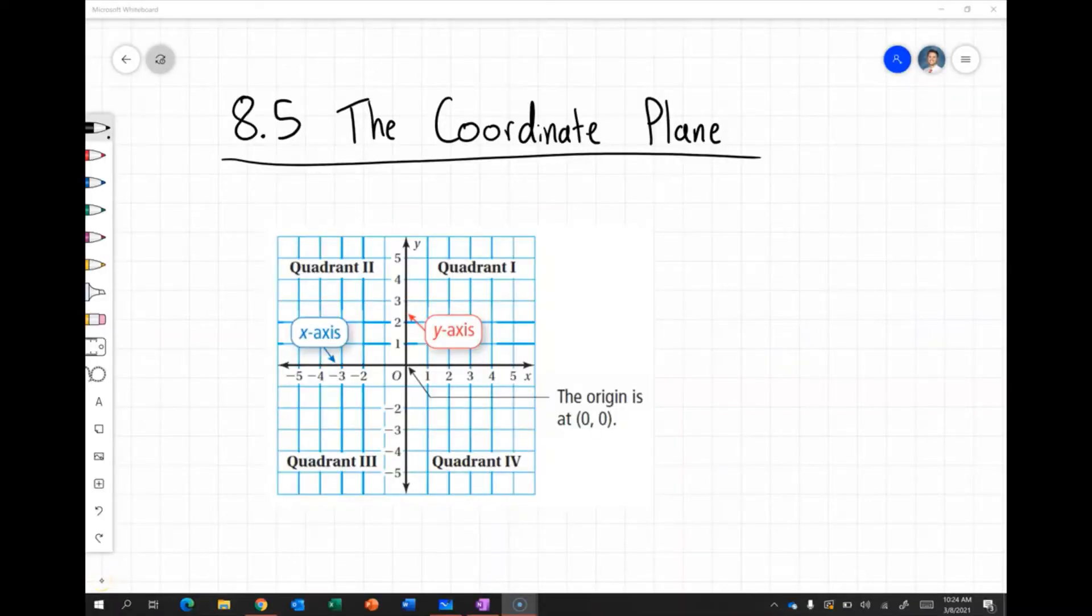In this video we are going to look at the coordinate plane. So in the past when we've seen the coordinate plane we've really just worked with what we call quadrant one, which is positive values of x and positive values of y.